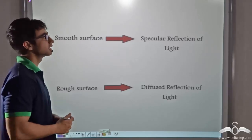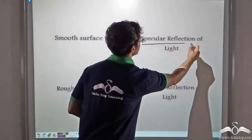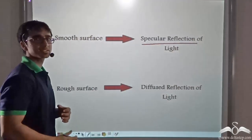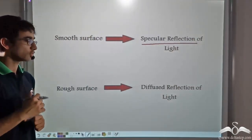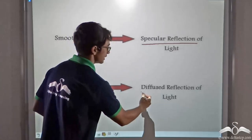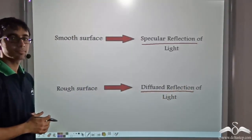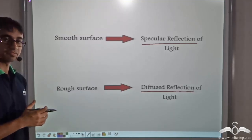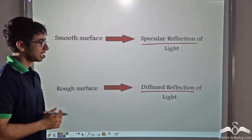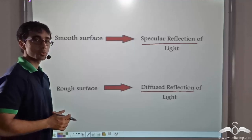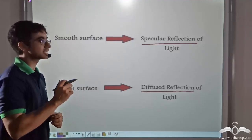And when a surface is rough, light falling on it undergoes diffuse reflection. Specular reflection was when a parallel beam of light reflected parallelly and diffuse reflection was when a parallel beam got scattered.